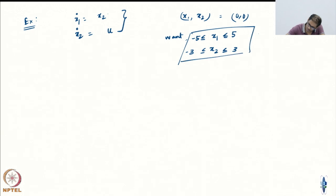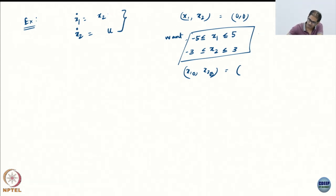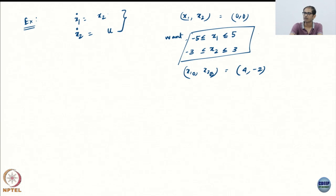I want this constraint in the transient. I will give initial conditions x1(0) = 4 and x2(0) = -2. I would like to start within this set — it does not make sense for me to start outside.